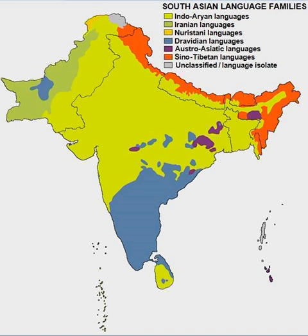The Prakrits became literary languages, generally patronized by kings identified with the Kshatriya caste. The earliest inscriptions in Prakrit are those of Ashoka, Emperor of the Maurya Empire, and while the various Prakrit languages are associated with different patron dynasties, with different religions and different literary traditions. In Sanskrit drama, kings speak in Prakrit when addressing women or servants, in contrast to the Sanskrit used in reciting more formal poetic monologues.